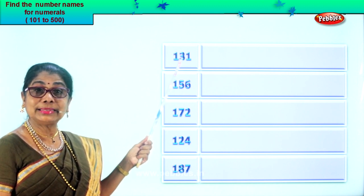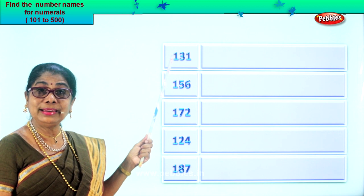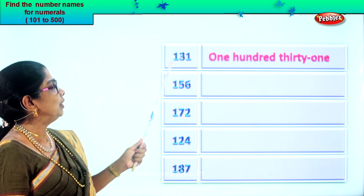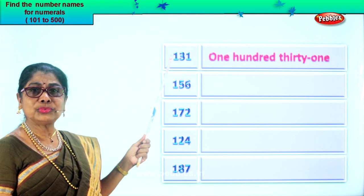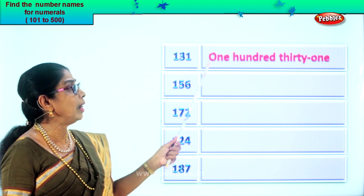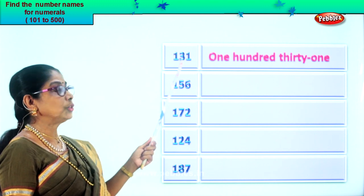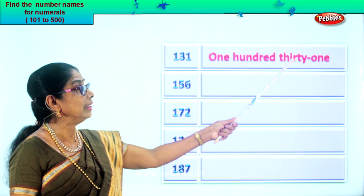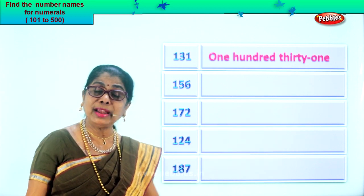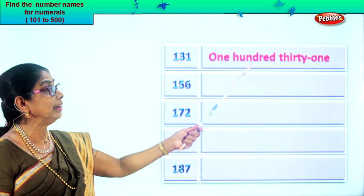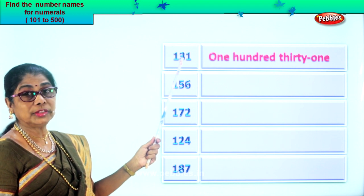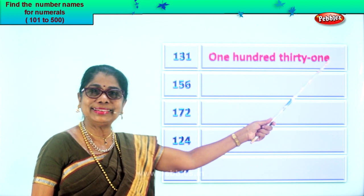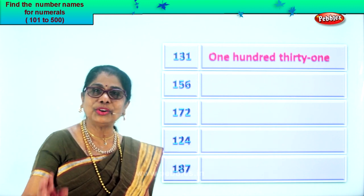Three in the tens place, so one hundred thirty-one. That's all. When you write, you see the one — you write one hundred. Then look at the next: thirty-one, you just write thirty-one. You already know the spelling of hundred and the spelling of thirty. So you write one hundred thirty-one. Isn't it interesting? Good.